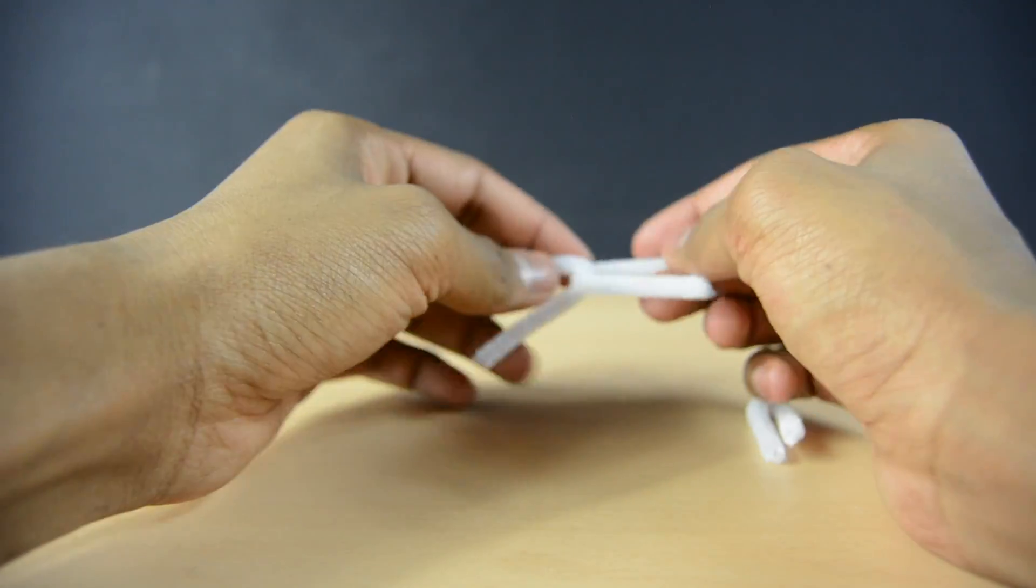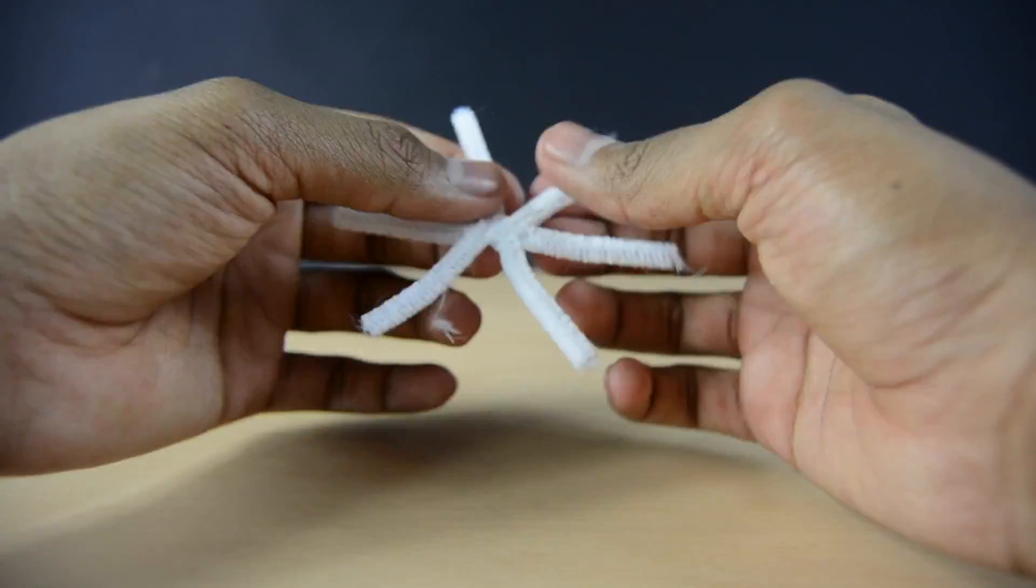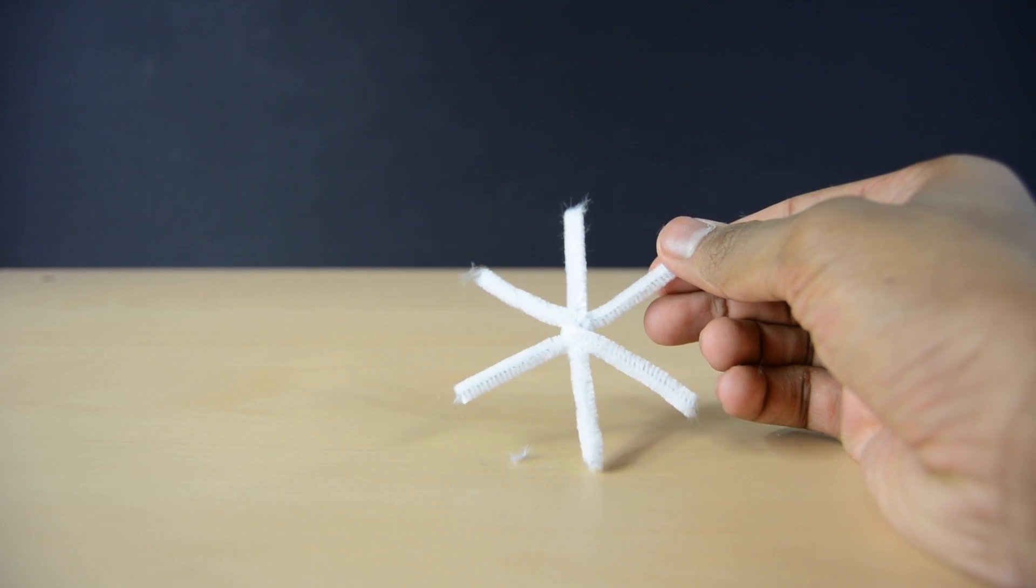As for the next step, you're just gonna have to go ahead and form the rough shape of the snowflake and it should just pretty much look like a star.